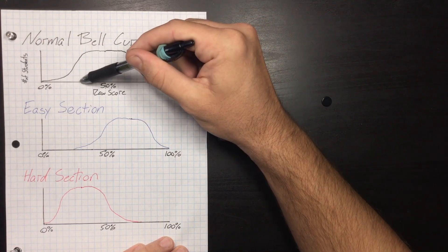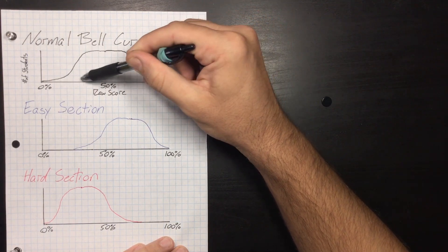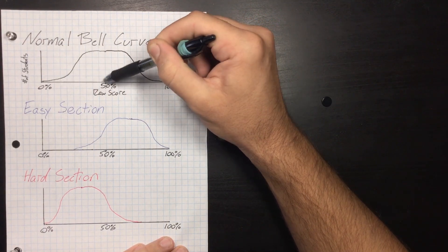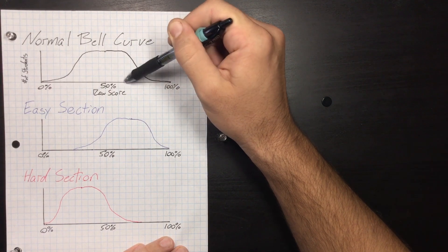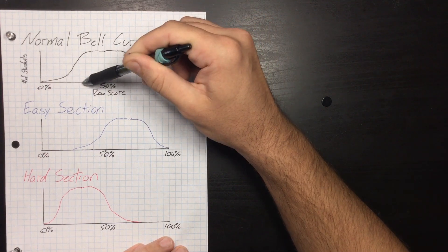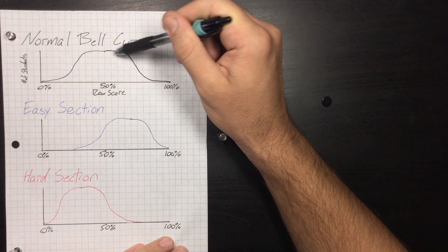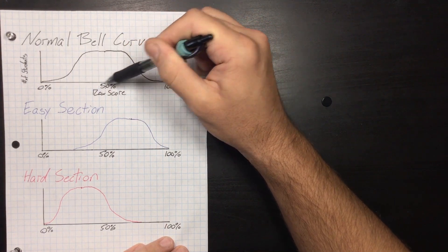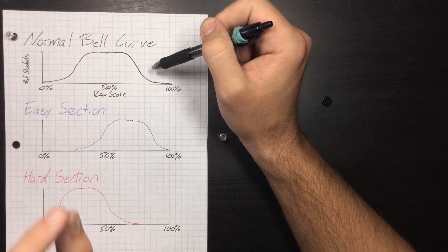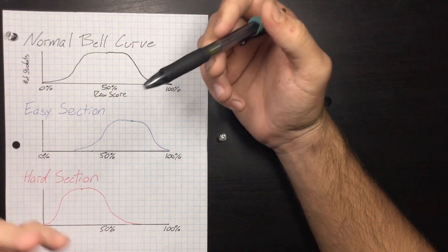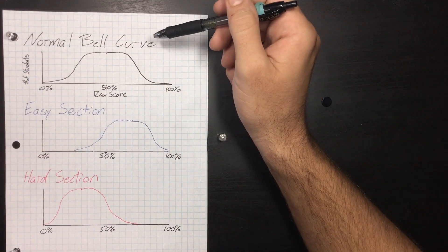So notice where the most amount of students are - right in the middle. That's what they want. They want a ton of students getting 50s and 60s and 70s and 30s and 40s. This is what they're looking for as far as the perfect SHSAT test or a section of the test.